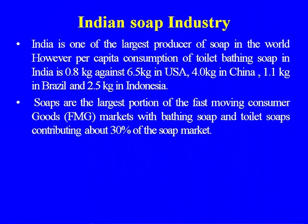India is one of the largest producers of soap in the world. With around 1.3 billion people, the requirement for soap and detergent is large. However, per capita consumption is less — India is 0.8 kg against 6.5 kg in USA, 4.0 kg in China, 1.1 kg in Brazil, and 2.5 kg in Indonesia. Soaps are the largest portion of fast-moving consumer goods, with bathing soap and toilet soap contributing above 30 percent of the soap market.